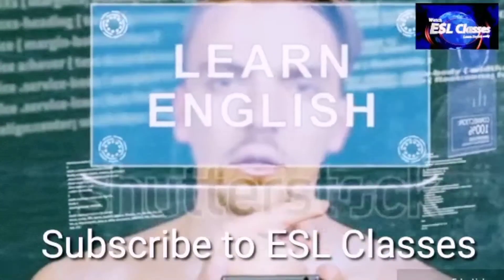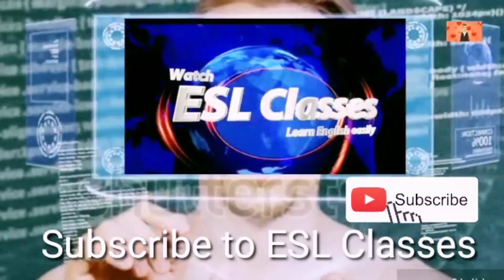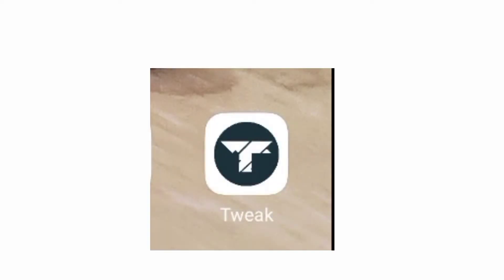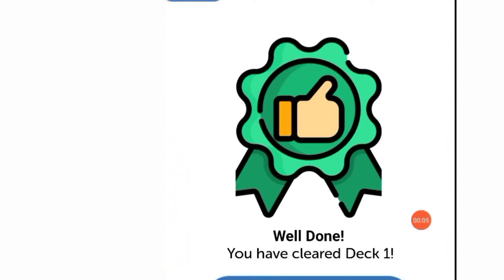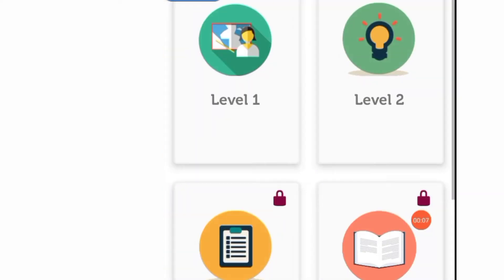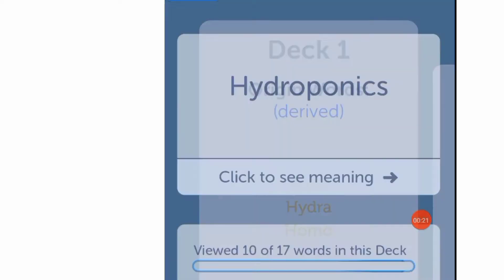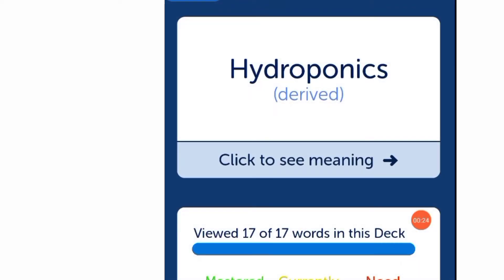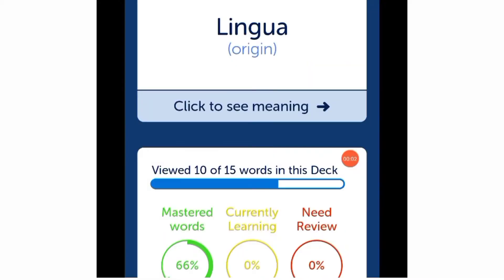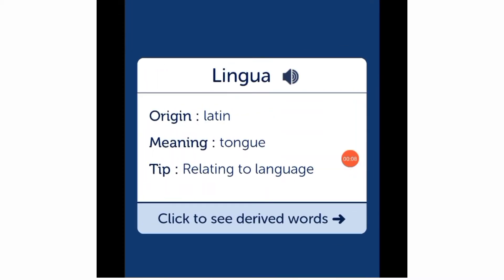So let's see how the application Tweak works. It has different levels and every level has some decks. Deck one carries three root words: equa, hydra, and homo. Let's shift to another deck — it carries the word 'lingua.' Lingua comes from the Latin language and it means tongue, which simply refers to a language.